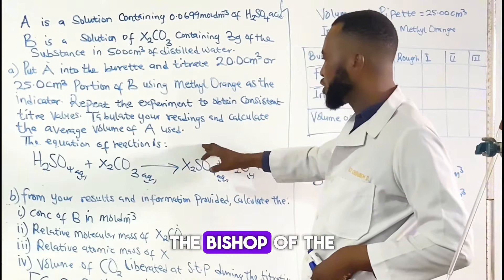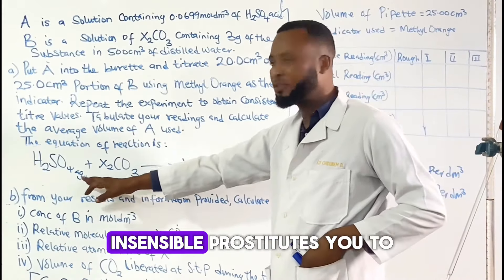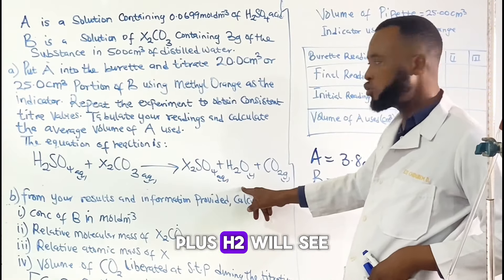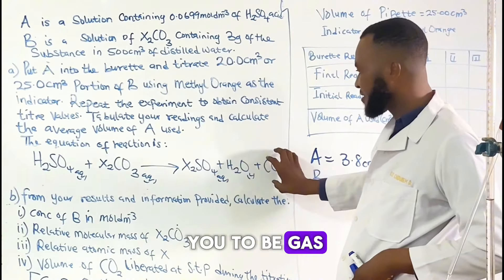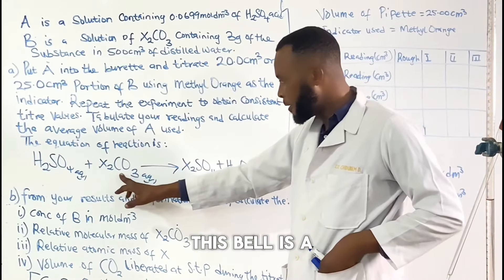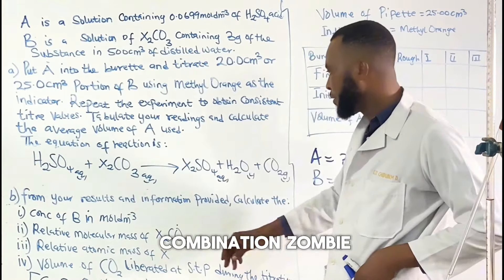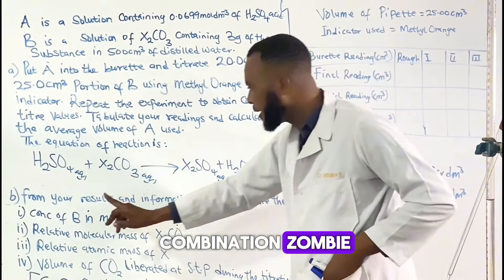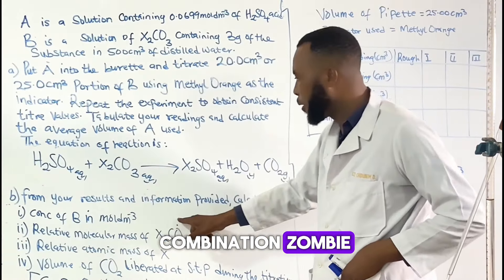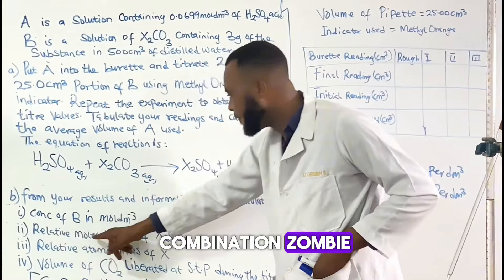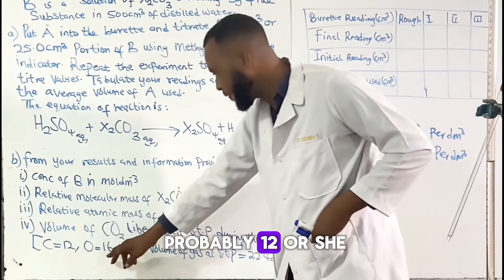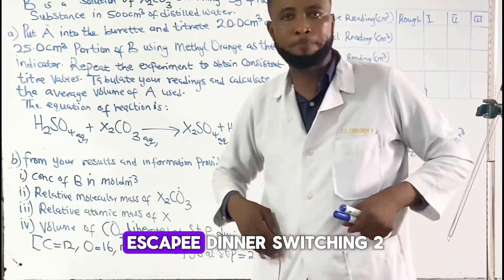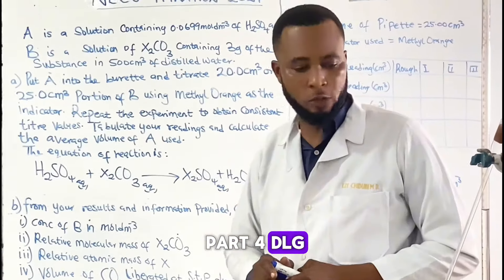The equation of the reaction is H₂SO₄ plus Na₂CO₃ to give Na₂SO₄ plus H₂O plus CO₂. The CO₂ gas migrates as it causes the base to decarbonate. From the results and information provided: calculate I, concentration of B in mol/dm³; then the total mass of carbon is 12, oxygen is 16, and the molar volume of gas at STP is 22.4 dm³.